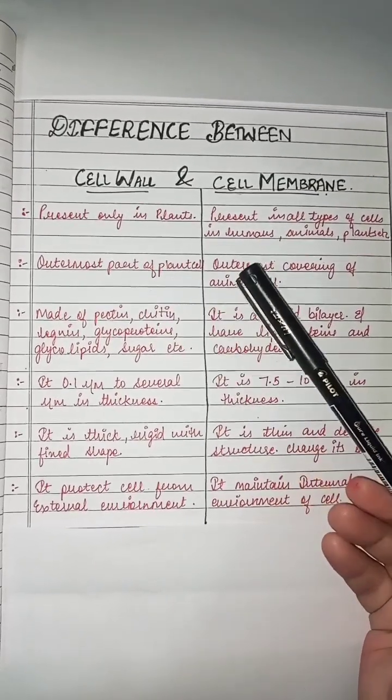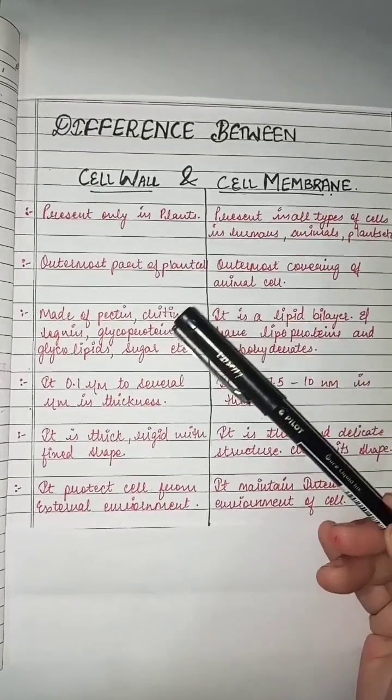...part of the plant cell, and the cell membrane is the outermost covering in the animal cell.